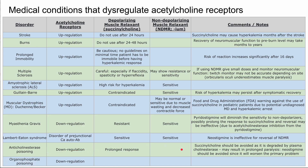Lastly, organophosphate poisoning also causes downregulation of acetylcholine receptors with similar manifestations — you may see resistance to succinylcholine. That covers this overview of medical conditions that dysregulate acetylcholine receptors and their implications for muscle relaxant use. Thank you for listening.